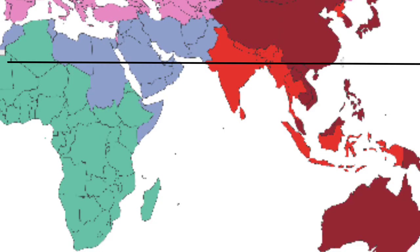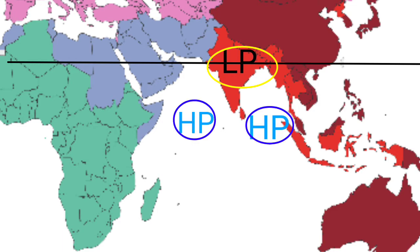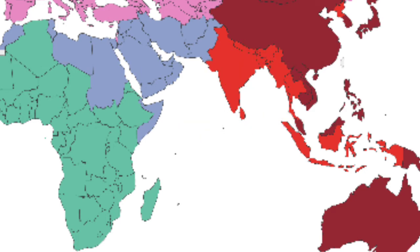During the summers, the continental areas or land masses receive direct rays due to the apparent movement of the sun. Over the Tropic of Cancer, direct rays fall and low pressure is created because of high temperature. But the surrounding oceans or water bodies have lower temperature, so high pressure is created. As a result, winds start blowing from the surrounding water bodies towards the land — these are moisture-laden winds that bring rainfall and cause monsoon.